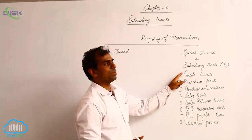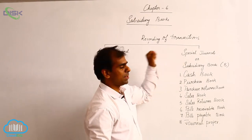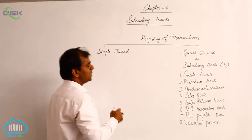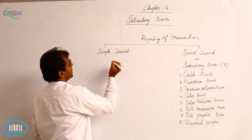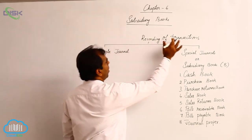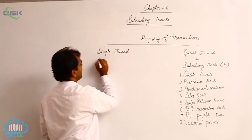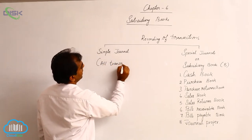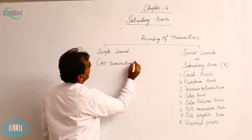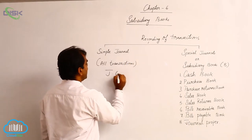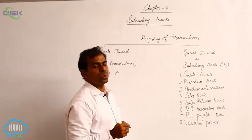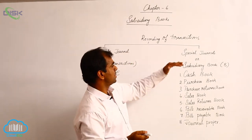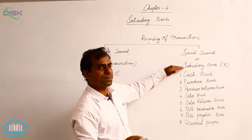The other name for subsidiary books is special journals. Now, you have already done a simple journal. For a quick recap, a simple journal is nothing but where you record all the transactions in the form of journal entries applying the rule of debit and credit. Now, what are special journals or subsidiary books?